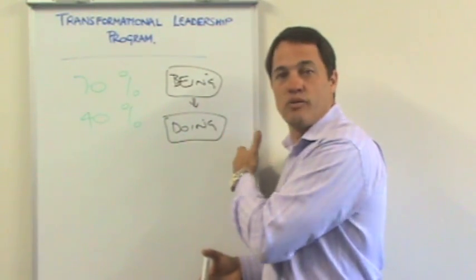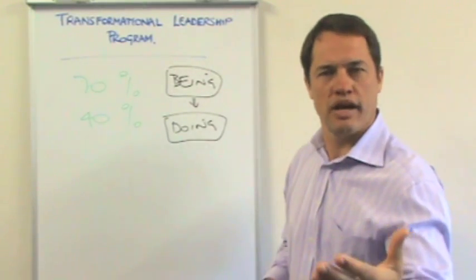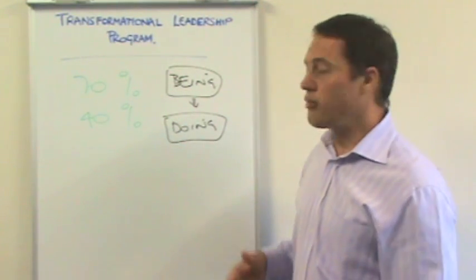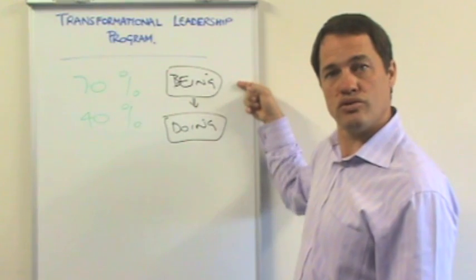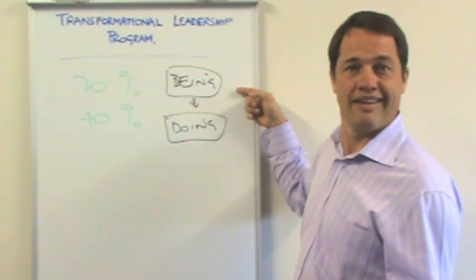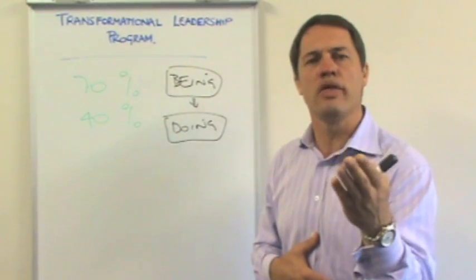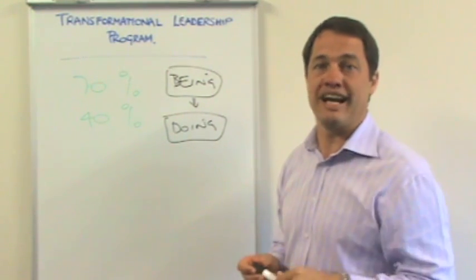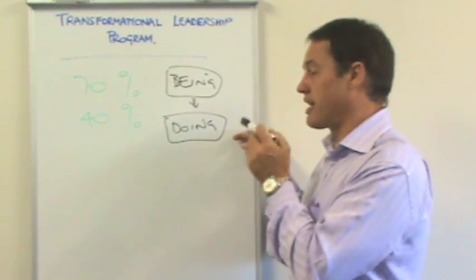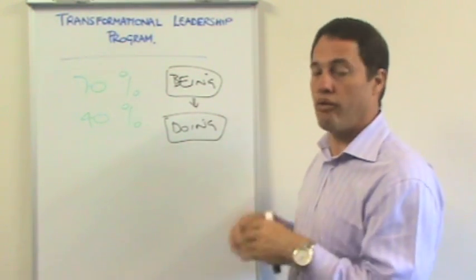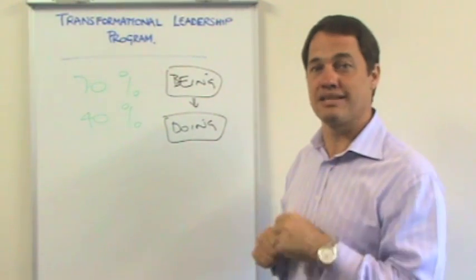And what I often see in organizations is there's so much focus on the doing. Another standard operating procedure, another manual, another checklist. But if you've got people who are using those checklists, who are using those standard operating procedures, who don't want to be there, who aren't invested in the business, who don't feel that they can give their best, who don't know their leader, and don't know whether that leader has got their best interests at heart, the doing's never great. Not only are the standard operating procedures often applied poorly or haphazardly, sometimes they're totally ignored. It's a sort of rebellious statement.